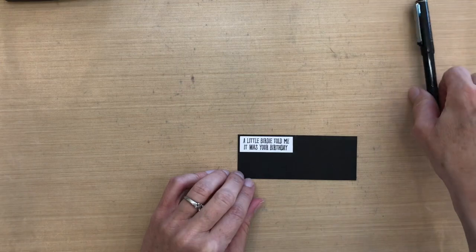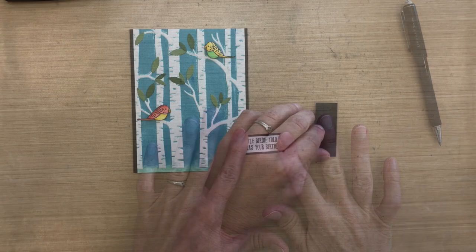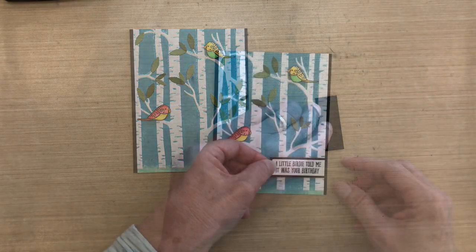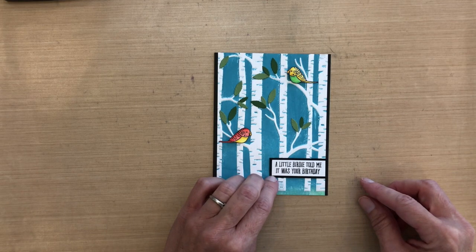I'll use tape runner to adhere it to the black, and then I'm going to put tape runner on the back of the black and adhere it to my card. I'm going to line up the white edge of my sentiment with the white edge of that tree with my embossed panel.